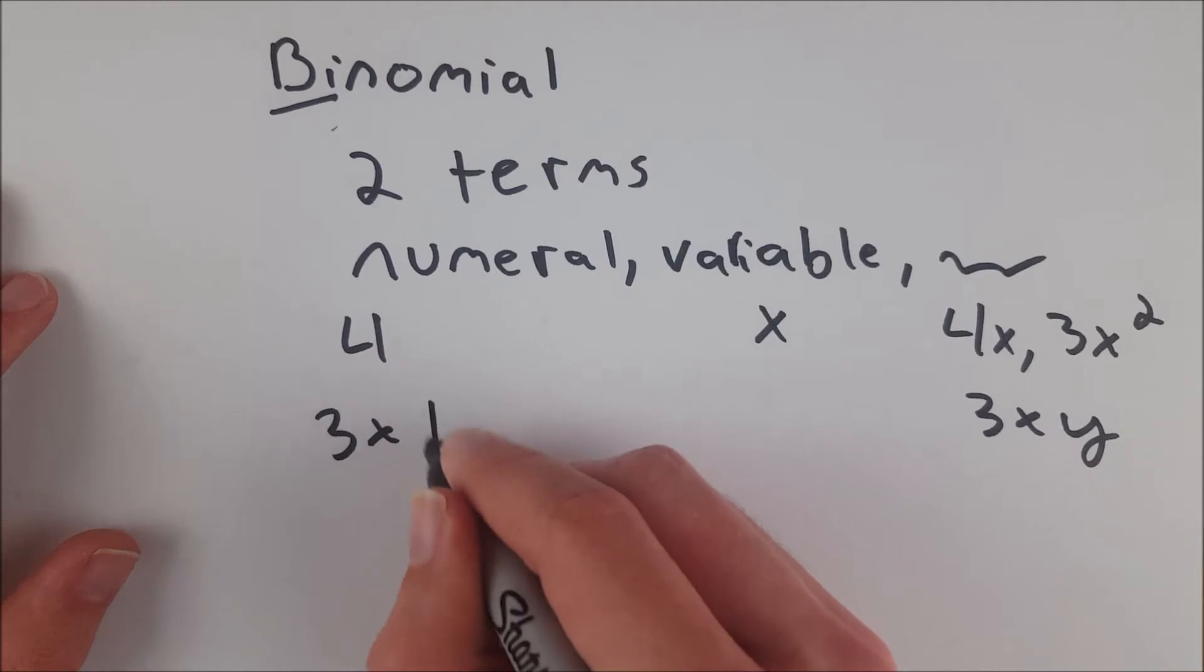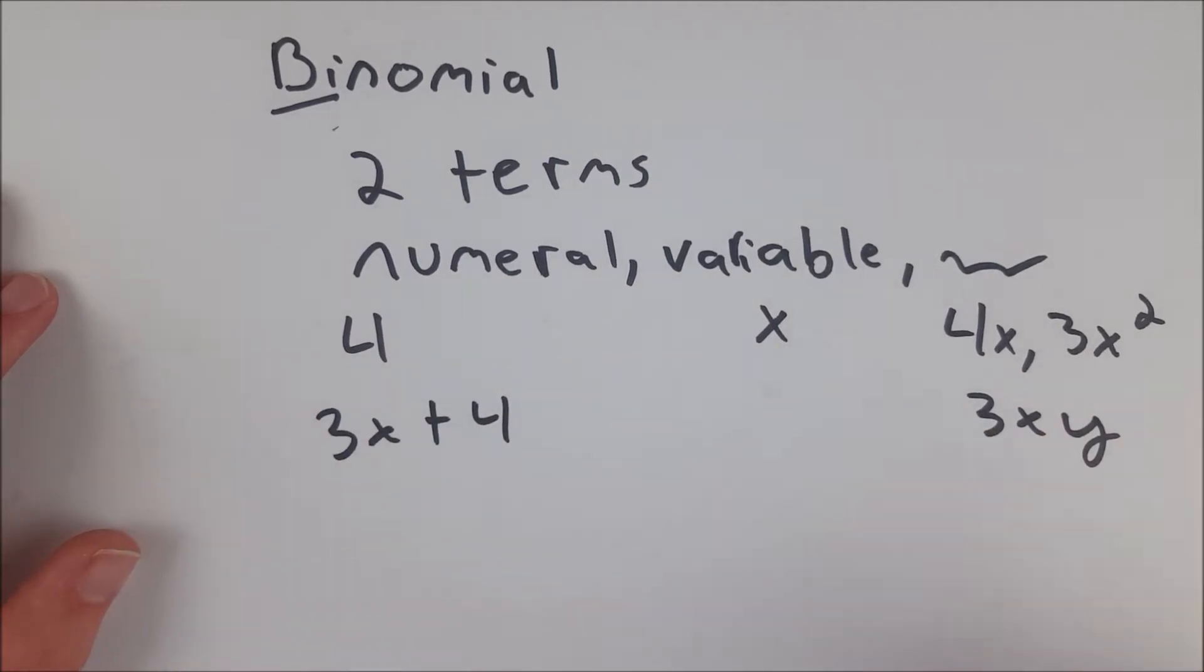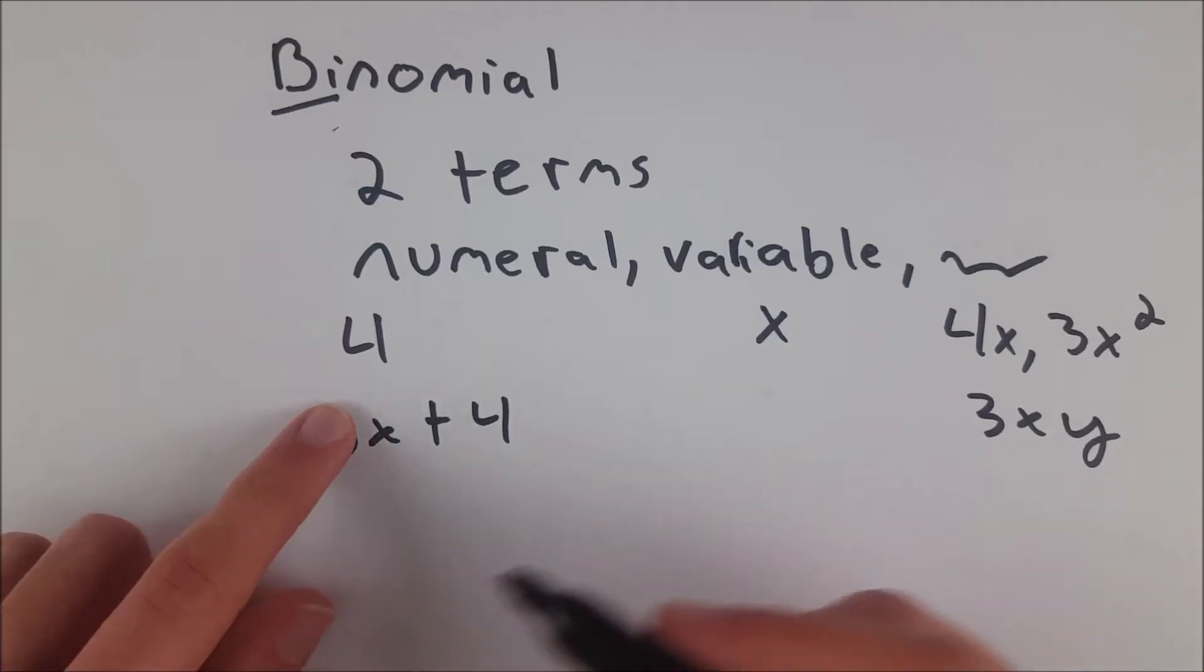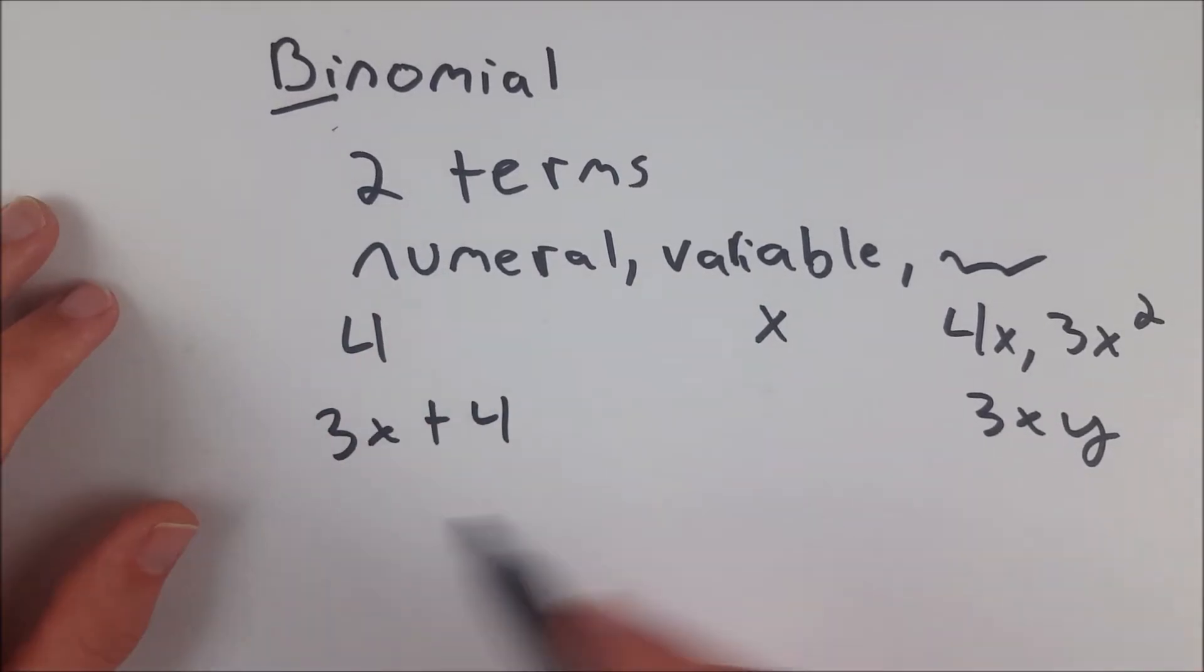For example, 3x plus 4 is a binomial. We've got one term here with a 3x, that's a product of a numeral and a variable, and then we've got our constant 4 over here.